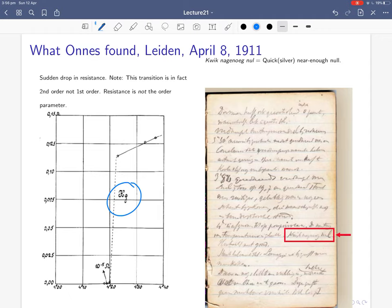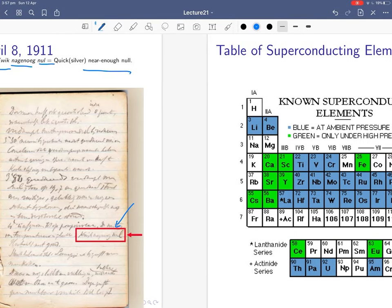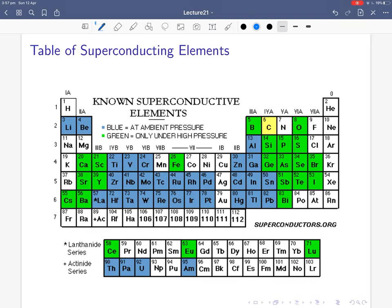The discovery we've already talked about in a previous lecture. Kamerlingh Onnes in Leiden did this on April 8, 1911. Here's his graph of the resistance of mercury versus temperature, 4.2 degrees Kelvin, and he gets the sudden drop to about something he thinks is about 10 to the minus 5 ohms. As he says in his notes here, 'kwik' which is quicksilver which is mercury 'nagenog nul' - that's probably my terrible pronunciation of Dutch but it means near enough null - he's seeing it basically as having zero resistance.